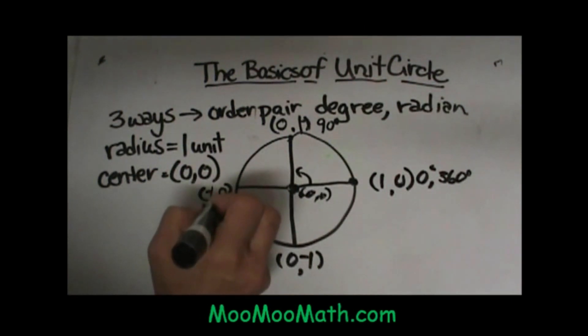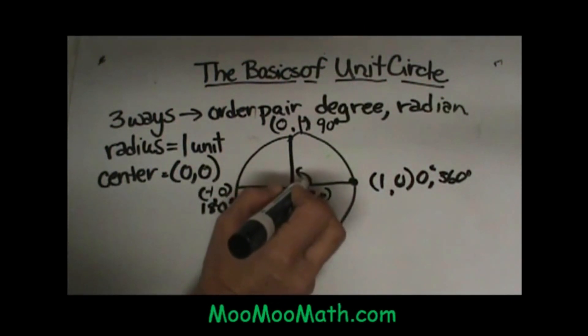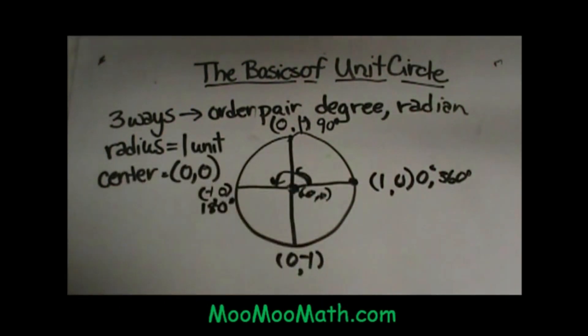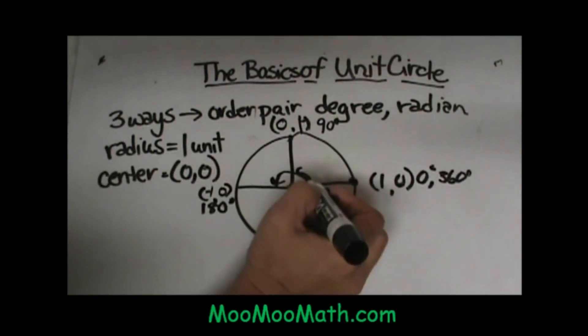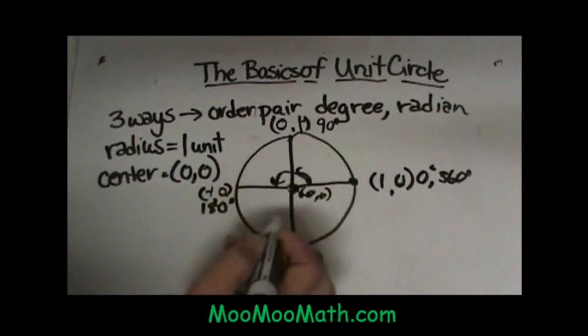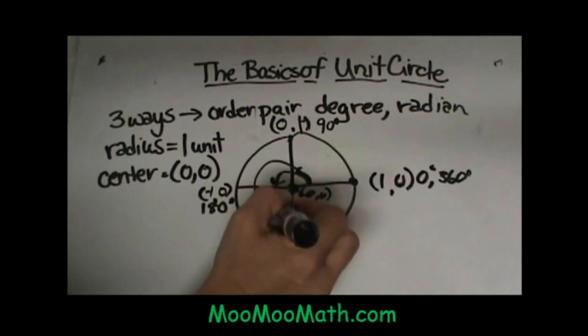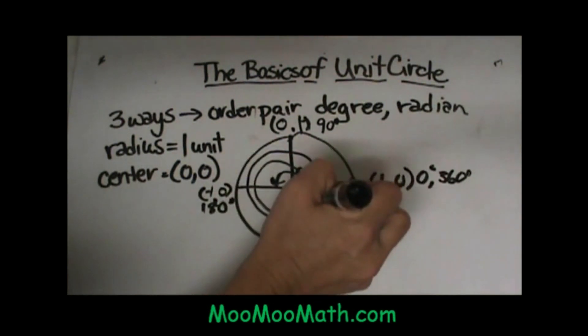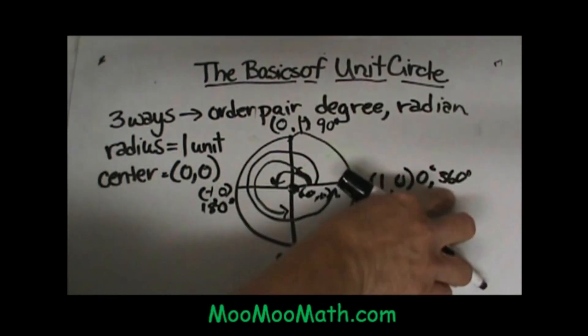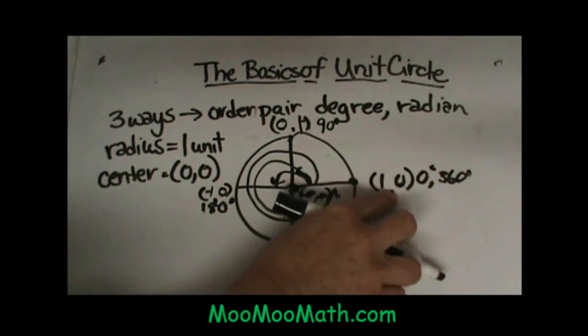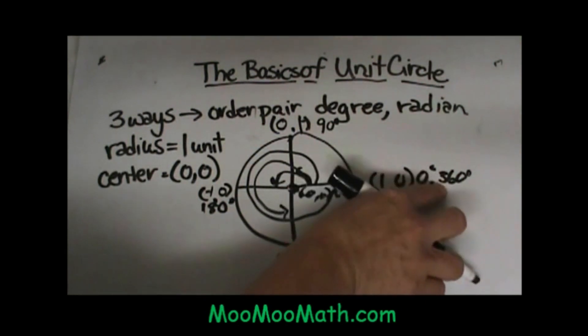Over here on the left, that's 180 degrees because we've traveled 180 degrees from the first point over here, and of course if we go all the way around the circle, that brings us back to 360 degrees. So there are the basics of the ordered pairs and the degrees.